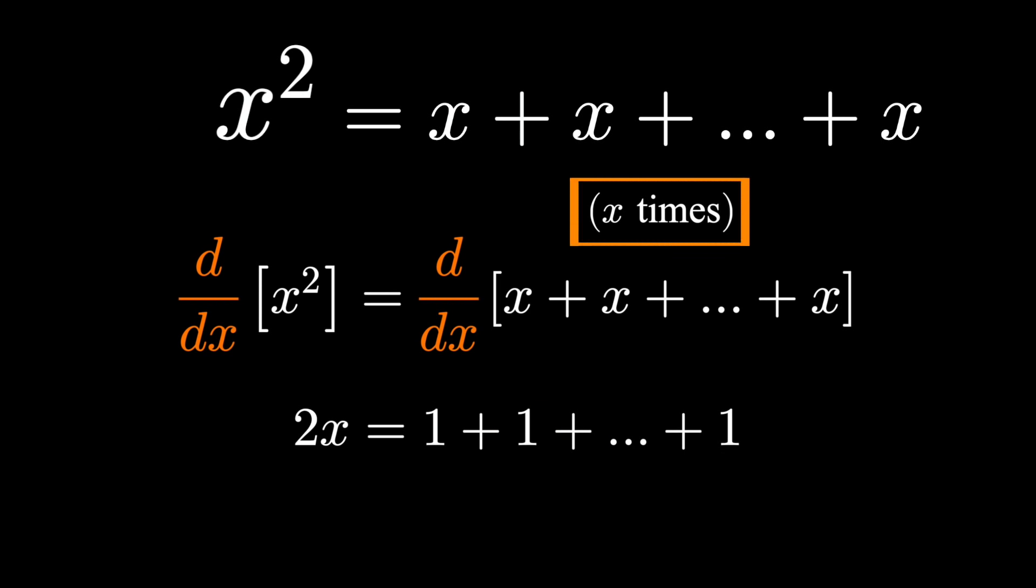So 2x equals x, dividing both sides by x gives us 2 equals 1.